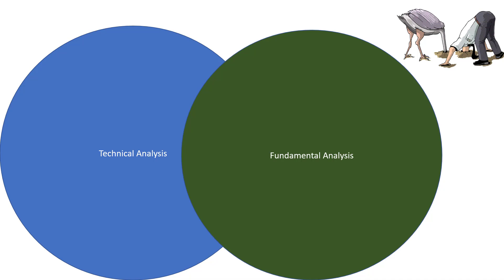The theory behind technical analysis is that the price takes all the news and all the information about that particular currency into account, so you can focus purely on price action. Fundamental analysis, on the other hand, says there are other things pushing the price up and down the whole time. For example, when COVID kicked in and the world went into lockdown, it did not take an Einstein to tell you that demand for fuel would drop dramatically, creating a glut in the market. Any trader worth their salt would short the oil price.